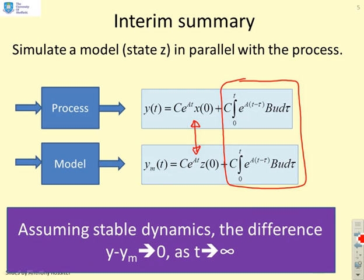Assuming stable dynamics, so assuming e to the At is convergent, then you can show very quickly that asymptotically y minus y_m must go to 0. That's because we're assuming e to the At goes to 0 and therefore asymptotically these two terms which differ both go to 0.